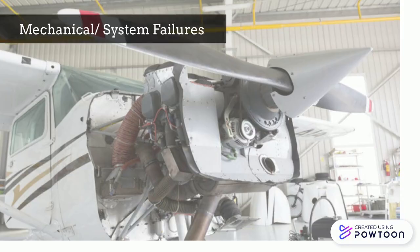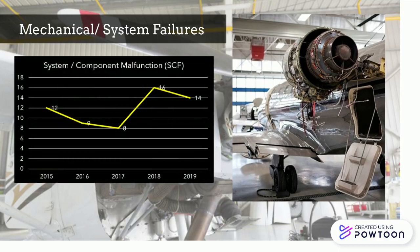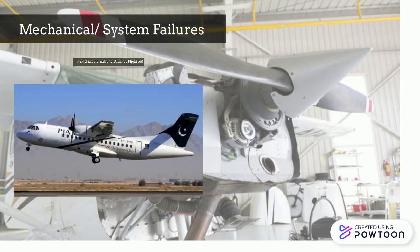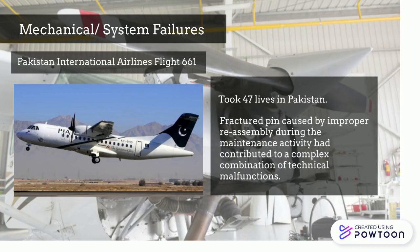Next comes mechanical or system failures. Even though safety inspections are carried out before a flight, there is a risk where replacement parts may not fit and work properly. The chart below shows the number of system or component malfunction accidents from 2015 to 2019. The crash of an ATR-42-500 aircraft that took 47 lives in Pakistan found that a fractured pin caused by improper reassembly contributed to a complex combination of technical malfunctions leading to the tragedy.